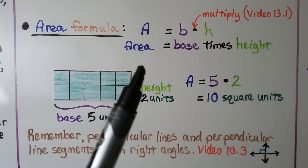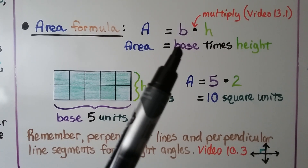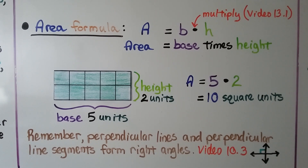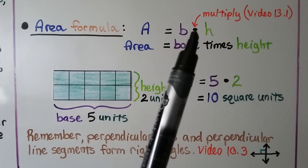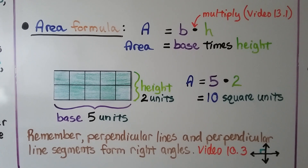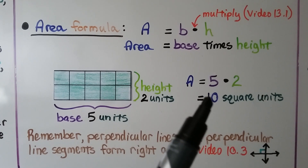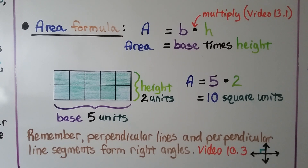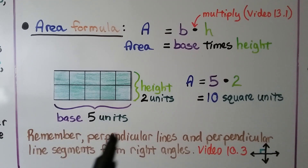The area formula is: A (area) equals base times height. We can use a floating dot to mean multiplication, because using an X might be confused with the variable X. Variables take the place of an unknown amount. For example, with a base of 5 units and a height of 2 units, we multiply 5 times 2, and the area equals 10 square units. Perpendicular lines and line segments form right angles — shown by the little box — as we learned in lesson 10.3.